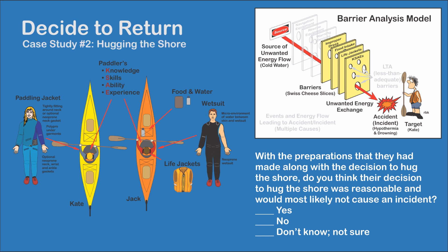Although you never know how things will turn out, they most likely had sufficient barriers — even with the omissions and their inexperience — to survive the day. The life jacket and a quick exit from the cold water would most likely have minimized the thermal impact of the unwanted energy flow from the cold water.